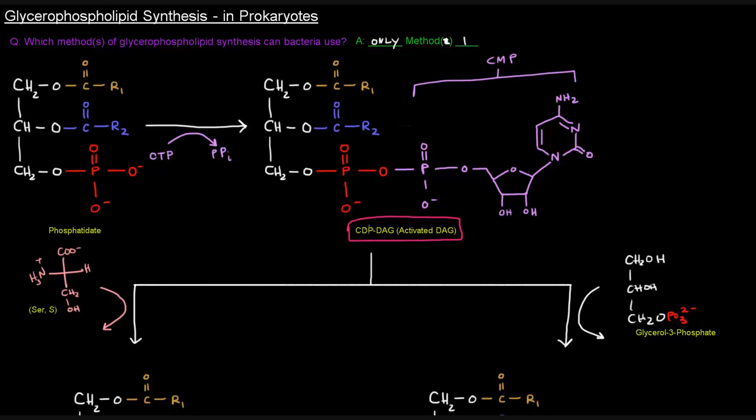It says CDPDAG. So it can get confusing, because it might make you think that both of these phosphates came from CTP when they didn't. One of them was already there from phosphatidate. The red one. And then the purple one came from the CTP. So we're effectively adding a CMP,